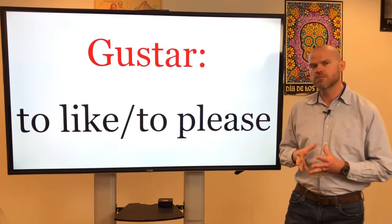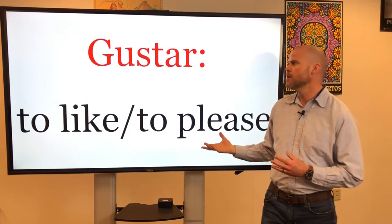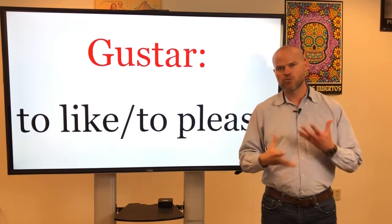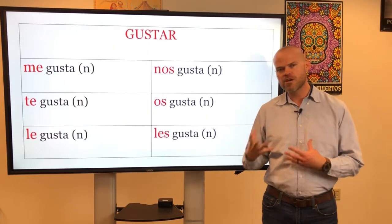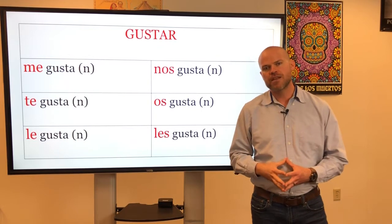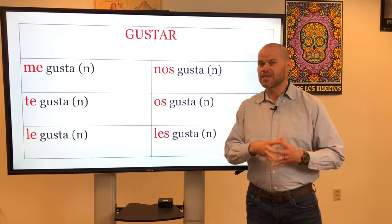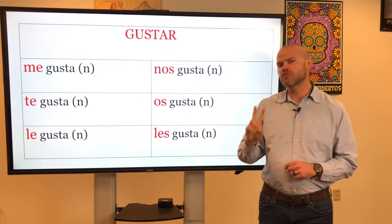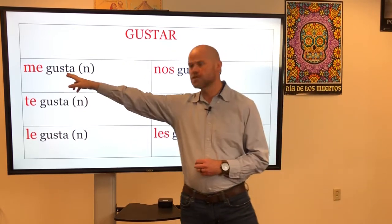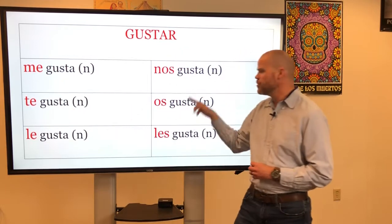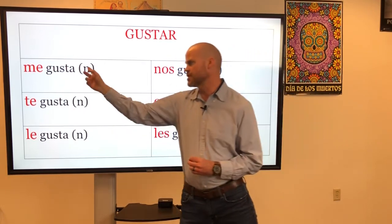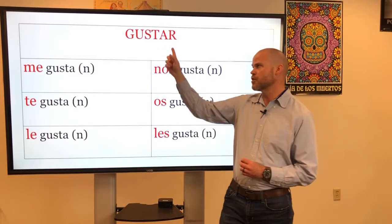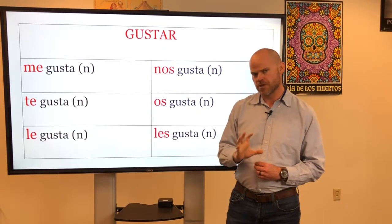Gustar means to like or to please. When we conjugate gustar, we don't conjugate it like we do normal AR verbs. Normally with AR verbs in the present tense, we add the o, as, a, amos, ais, an endings. But with gustar, notice we only use two forms of the verb: the third person singular, gusta, and the third person plural, gustan. For now, those are the only two forms we're going to use.